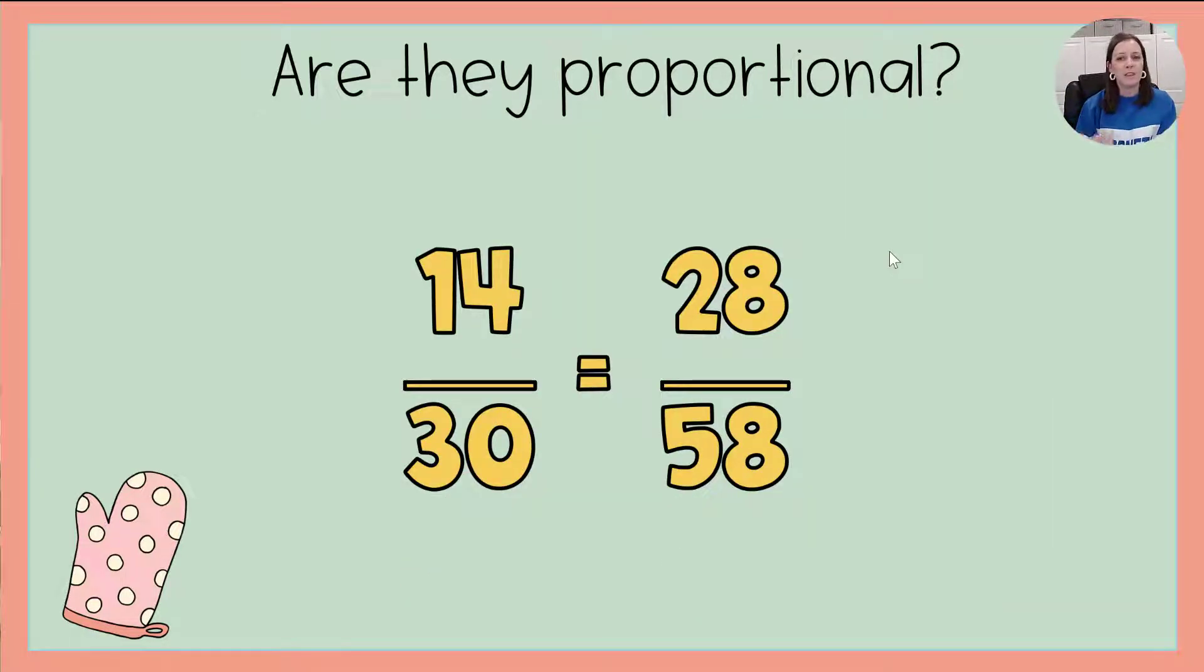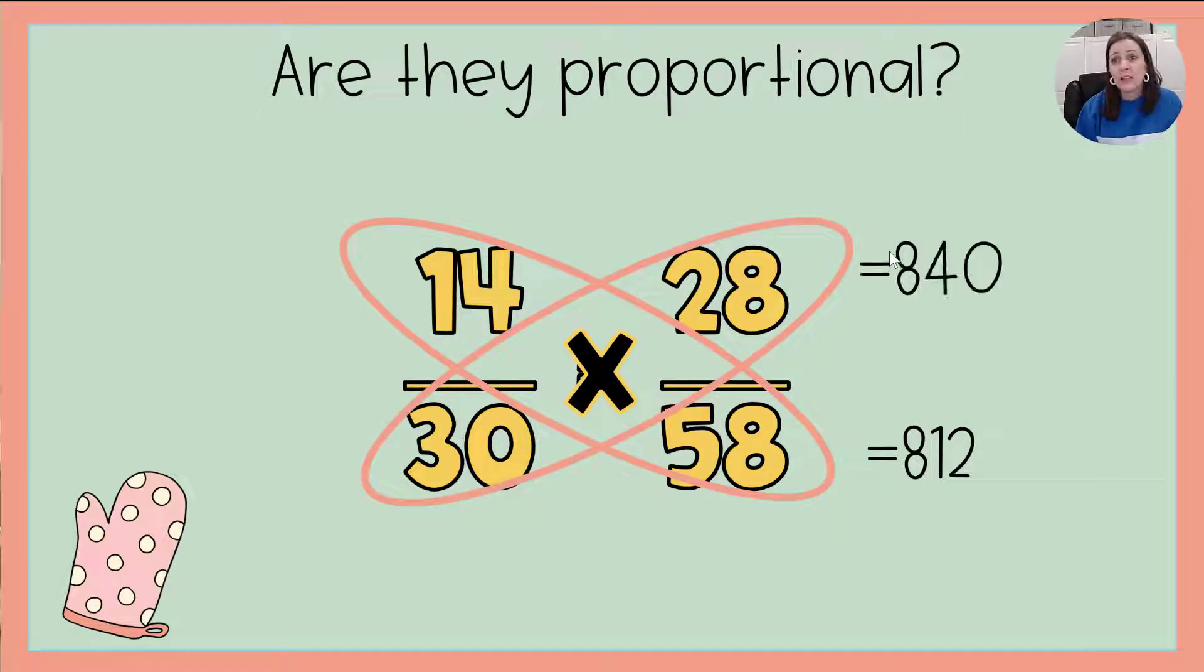Let's try that strategy with this set of ratios, 14 to 30 and 28 to 58. 14 times 58 is 812, 30 times 28 is 840. Those are not the same answer, so are they proportional? No, they are not equivalent.